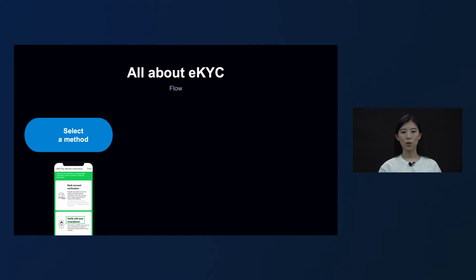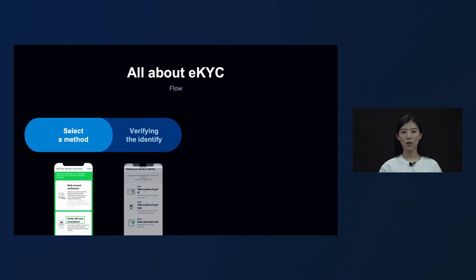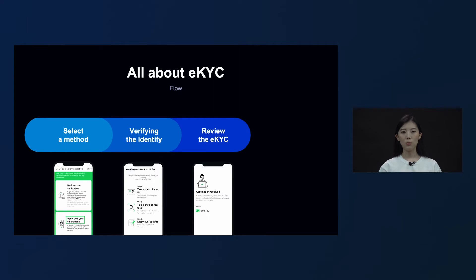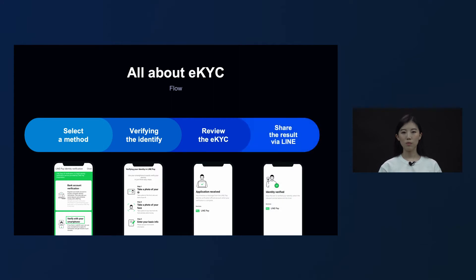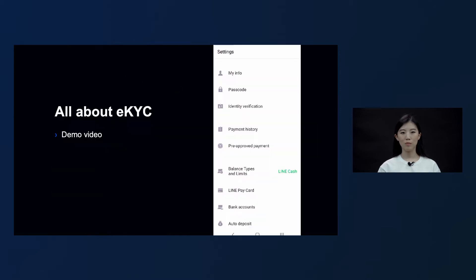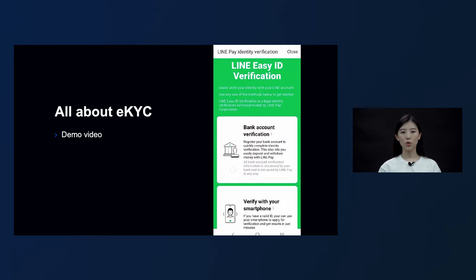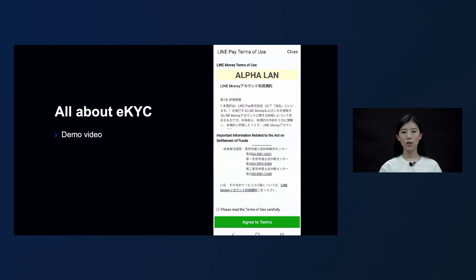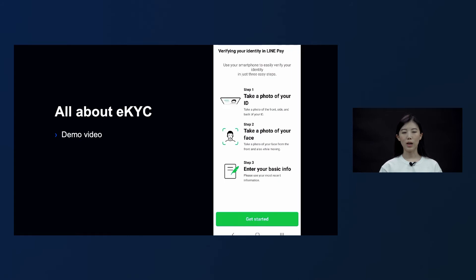When the user chooses the eKYC option from the Select a Self-Verification Method page, several tasks are presented. Once the user completes all of the given tasks and therefore completes the application process, the application is either approved or rejected through a separate screening process, and the KYC process is completed only when the application is approved. I will explain the details of the flow while showing a demo of the most recent version of the eKYC.